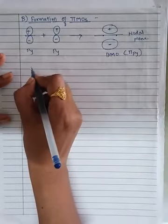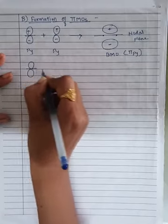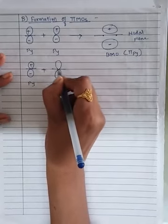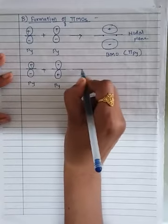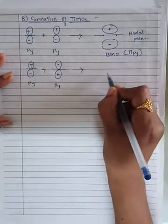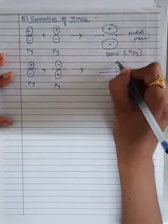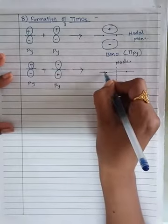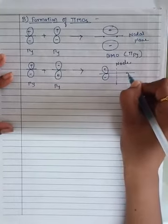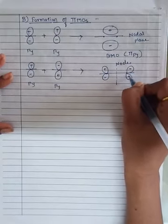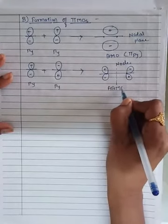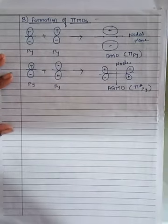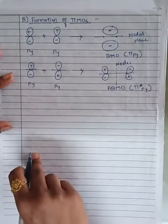For the pi anti-bonding MO, the PY orbital undergoes combination with another PY orbital with opposite signs. Due to opposite signs, there is repulsion and a central nodal plane forms. Across the node, the repelled orbitals appear on each side — one side with plus-minus and the other with minus-plus. This is called the anti-bonding molecular orbital, named pi asterisk PY.